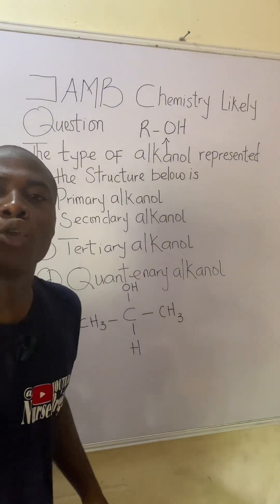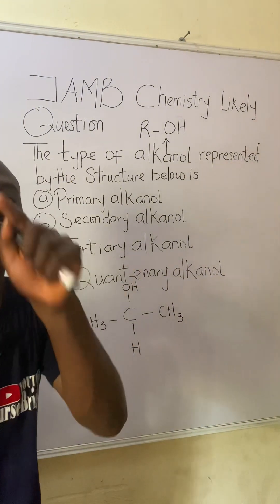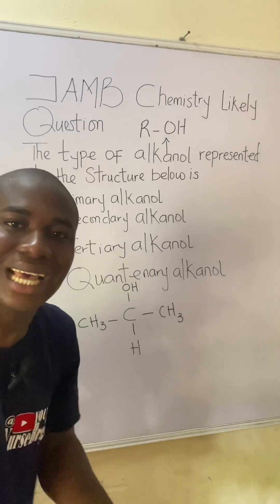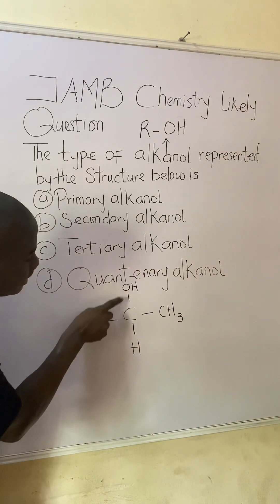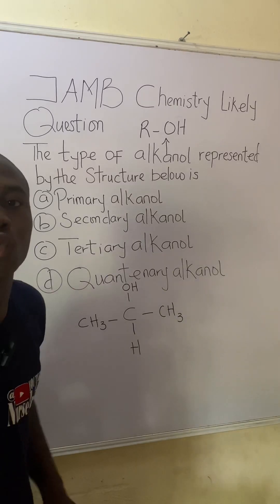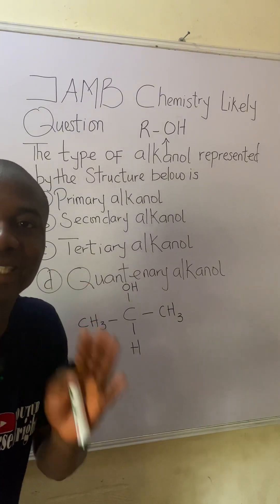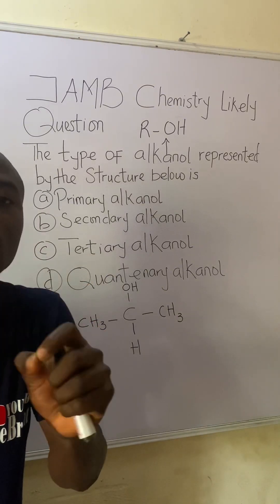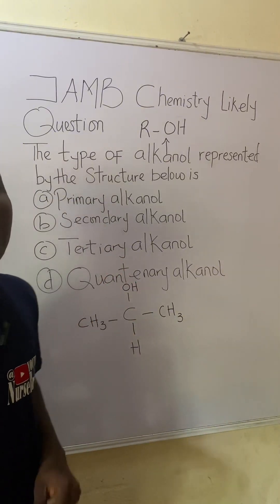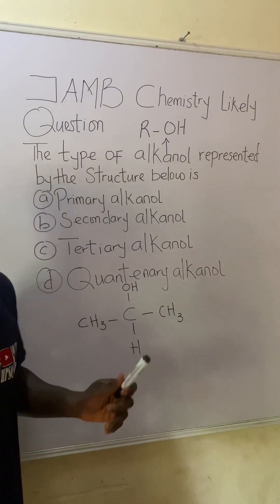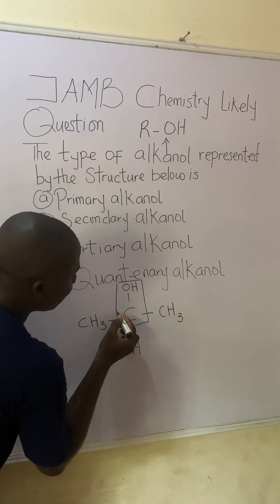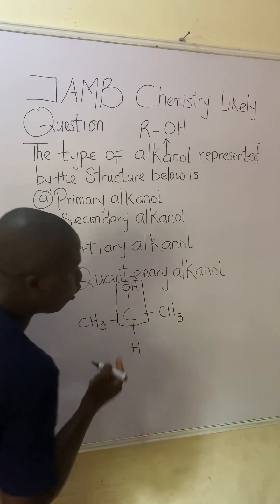Next, you watch out for the carbon to which this hydroxyl group is directly attached. You can see that this group is directly attached to this carbon. Now listen carefully — to know the type of alcohol, you check that carbon bearing the functional group.